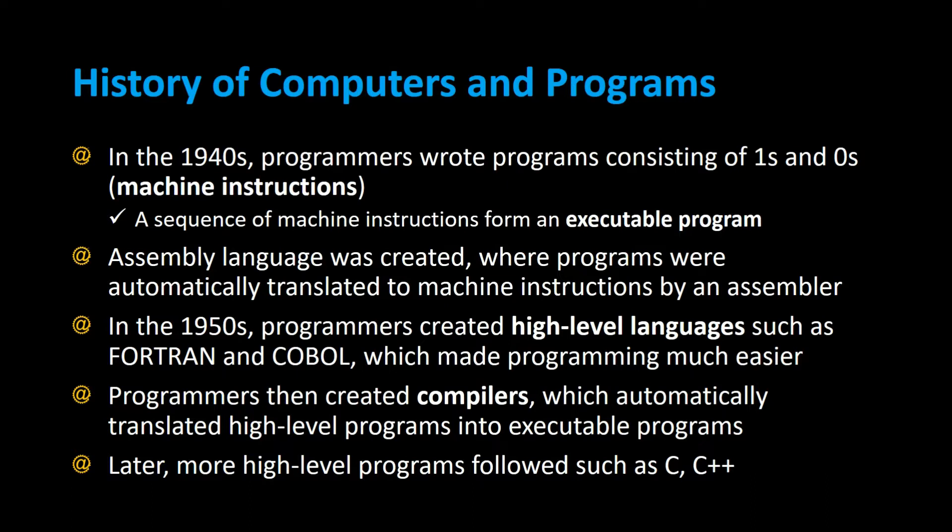In the 1950s, programmers created high-level languages such as Fortran and COBOL, which made programming much easier. Programmers then created compilers, which took this high-level program that's easy to understand and converted it into an executable program that the machine could understand.